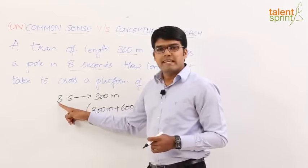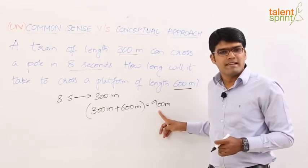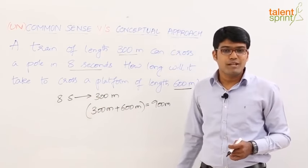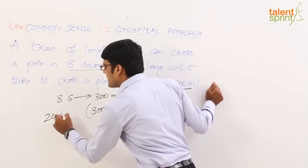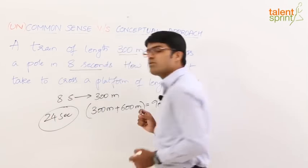So if 300 meters take 8 seconds, 900 meters would take how many seconds? 8 into 3, that is 24 seconds. So we can say that the answer for this question is 24 seconds.